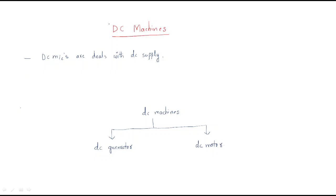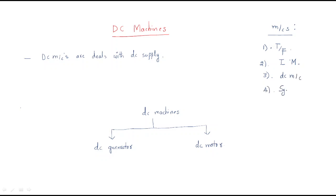Hello everyone, we will enter into the next topic: DC machines. In electrical machines, we have a number of types. Briefly, we can divide them as: first, transformers; second, induction machines; third, DC machines; and fourth, synchronous machines. These are the main types of electrical machines.